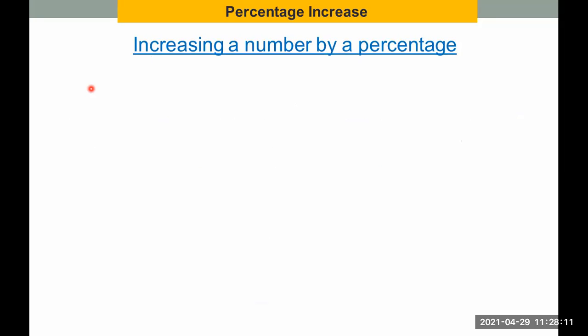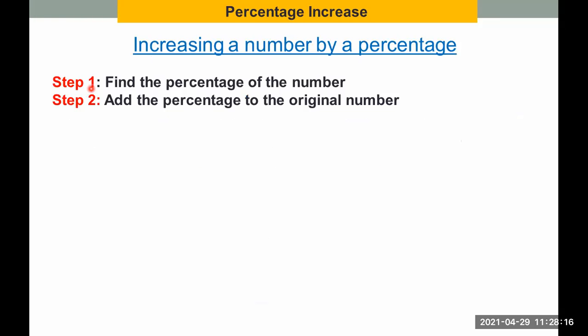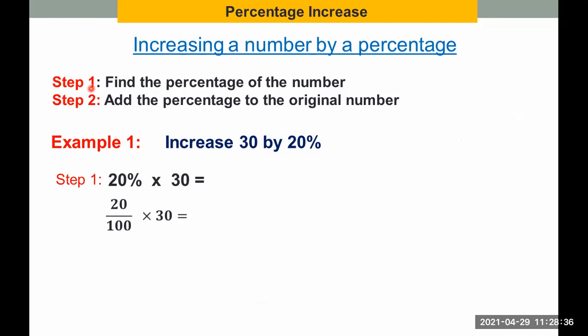Now, in increasing a number by a percentage, there are steps to follow. First is find the percentage of the number or a quantity or an amount. This is the lesson we had last time. And add the percentage to the original number. So, let's say, for example, increase 30 by 20%. First, we get 20% of 30, which is 20 over 100 times 30. And then we divide 30 by 100, which is 0.3. Then multiply it by 20. So we got 6. So, 20% of 30 is 6.